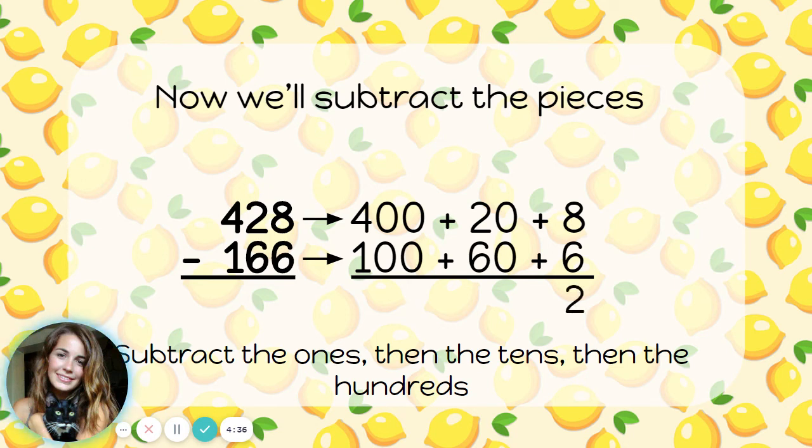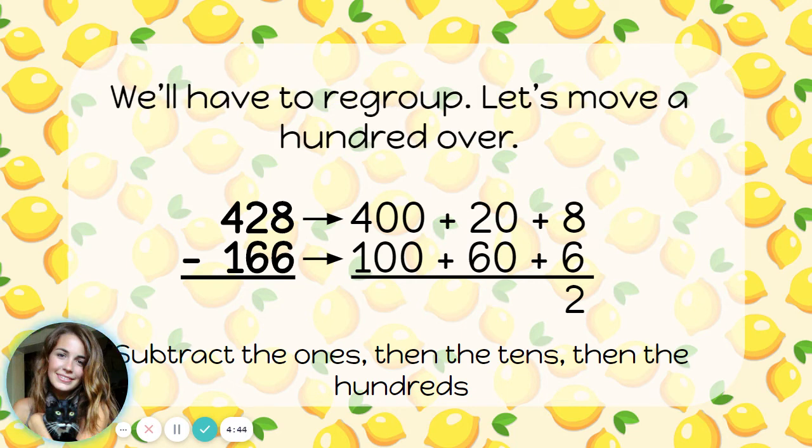20 minus 60 is... hmm. I can't take 60 away from 20. 60 is bigger than 20. I'm going to have to do some regrouping here. Let's move a group of 100 over into the tens place.